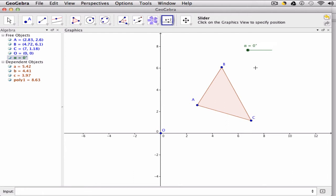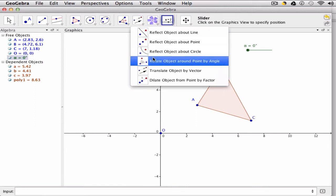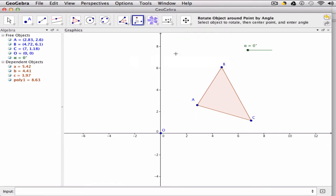So what do I do? Well, I can tell GeoGebra to rotate this shape around this point by this angle. Here's how I can do that. I click the tool up here, rotate object around a point by angle.